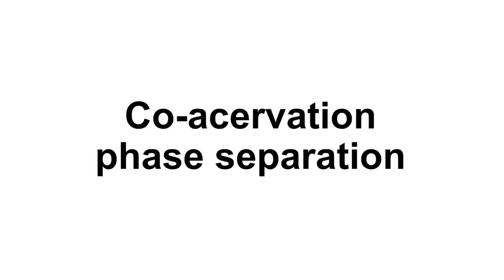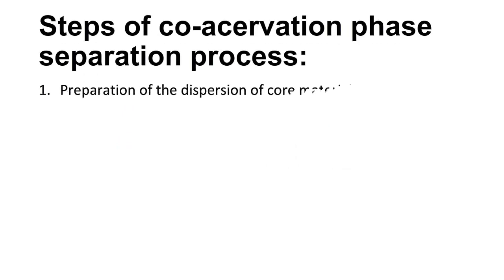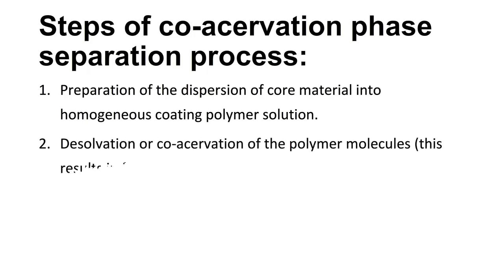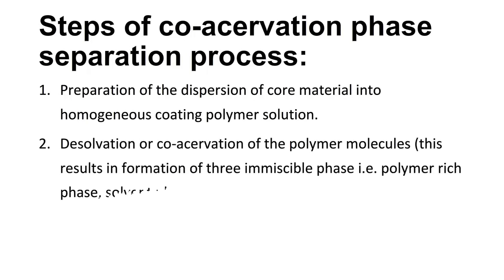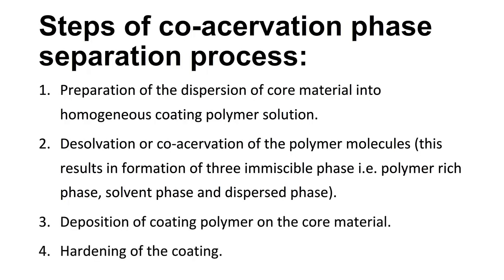Microencapsulation by Coasservation Phase Separation. Steps of coasservation phase separation process are as follows. The first step is the preparation of the dispersion of core material into a homogeneous coating polymer solution. The second step is dissolvation or coasservation of the polymer molecules. This results in the formation of three immiscible phases, that is polymer-rich phase, solvent phase, and dispersed phase. The third step is the deposition of coating polymer on the core material. And the fourth step is hardening of the coating.